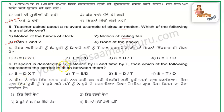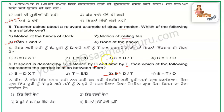If speed is denoted by S, distance is denoted by D, and time is denoted by T, then which of the following represents the correct relation between them? Speed is equal to distance divided by time, so the third option is correct.